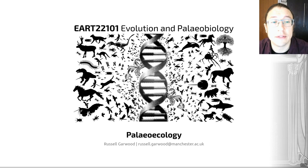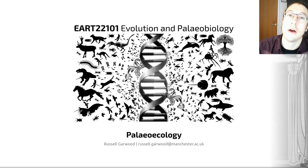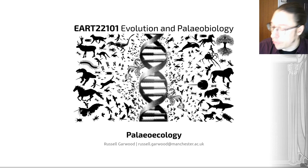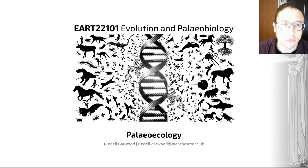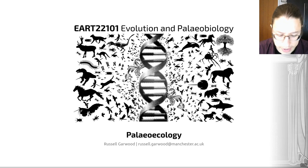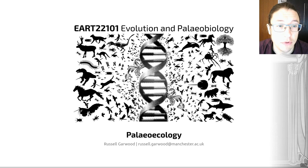We'll look at some of the biases we may expect when looking at fossils — what we would call taphonomic biases. Taphonomy is the study of fossil preservation, and you'll be having a lecture on that with Rob later in this course. But we have to understand those biases if we want to maximise what fossils can tell us about past environments.